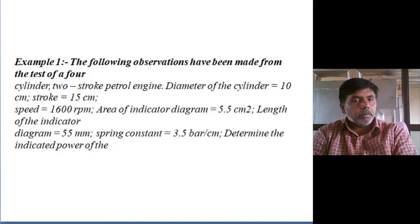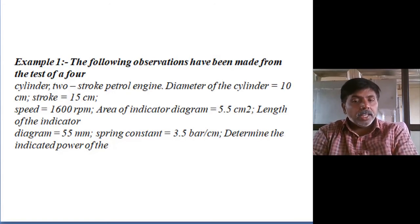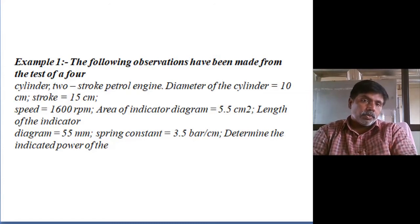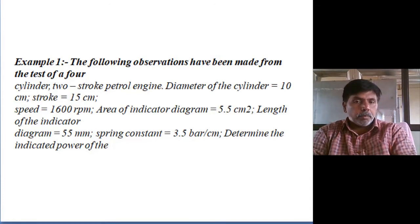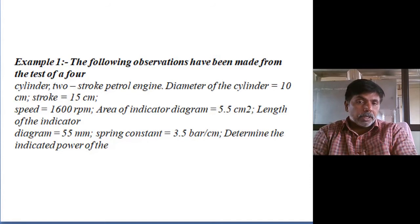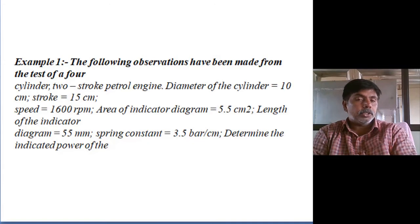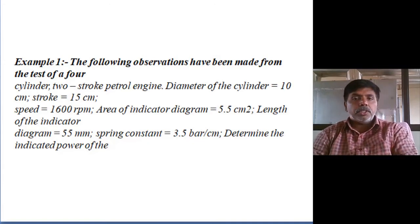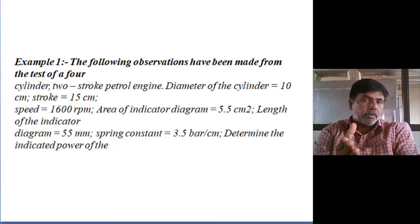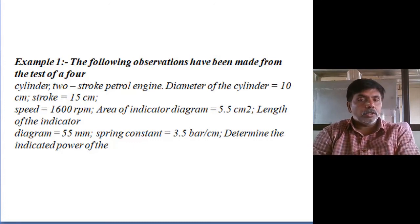Everything is given except the mean effective pressure. For determination of mean effective pressure, area of the indicator diagram is 5.5 cm squared, length of the indicator diagram is 55 mm — convert to centimeters — and spring constant is 3.5 bar per centimeter. Maintain centimeter units throughout; the final output will be in bars. Convert to Newton per meter square by multiplying by 10 to the power 5.